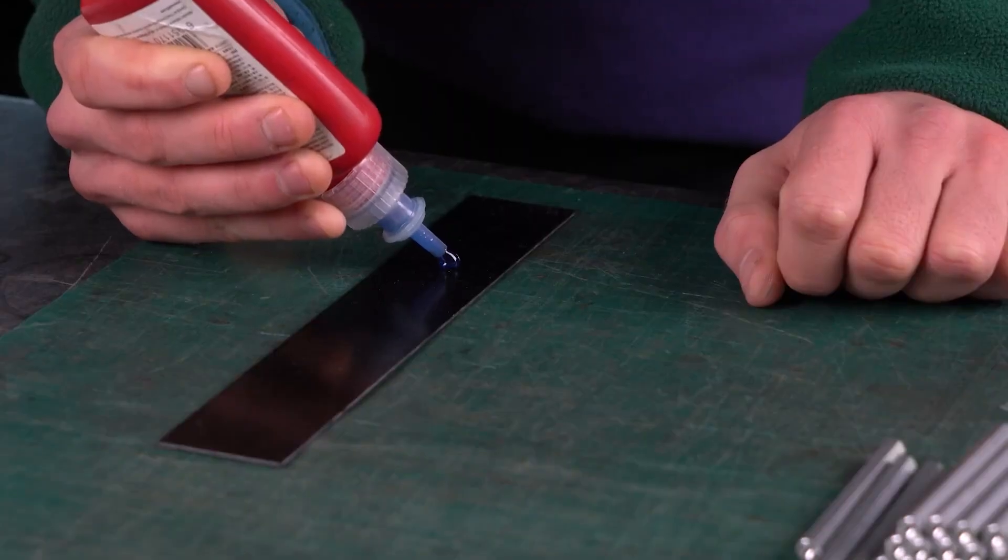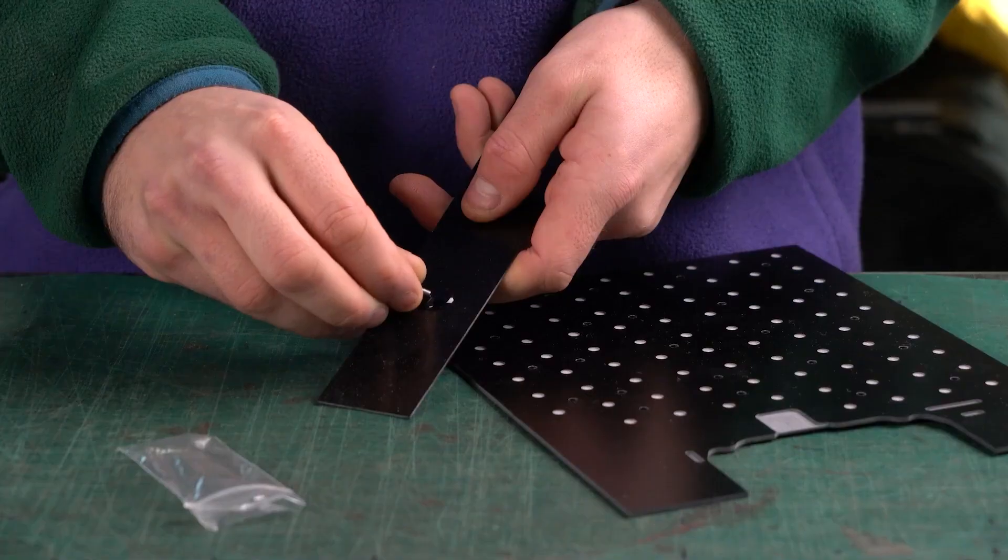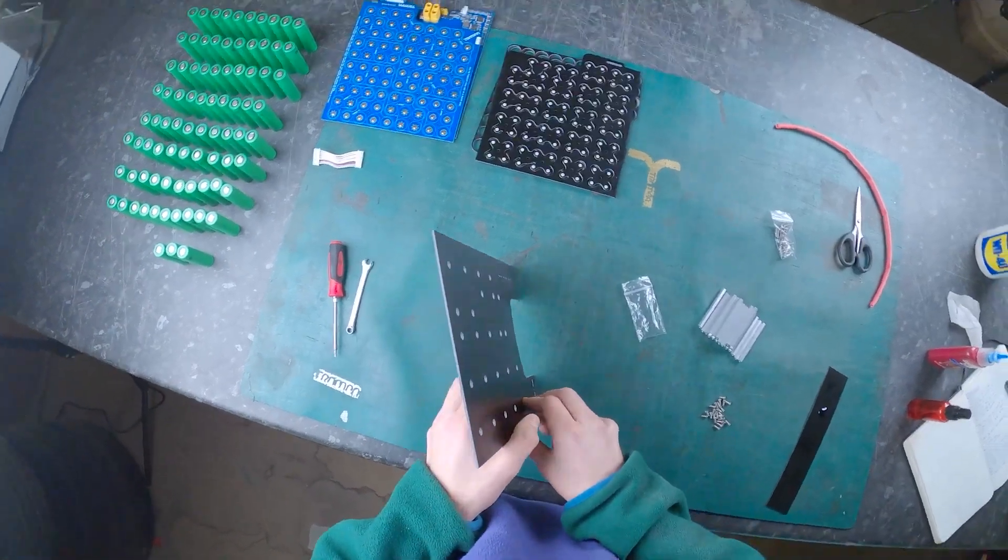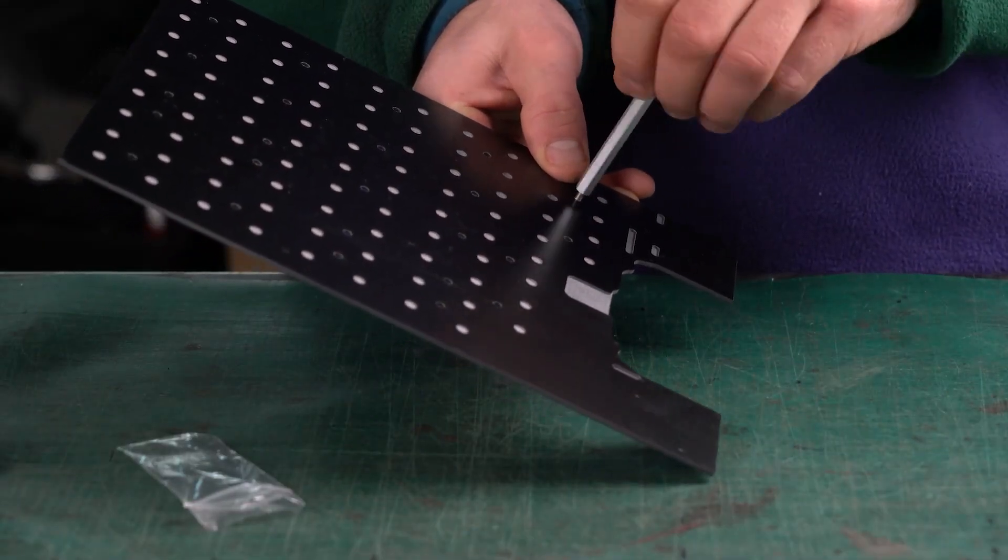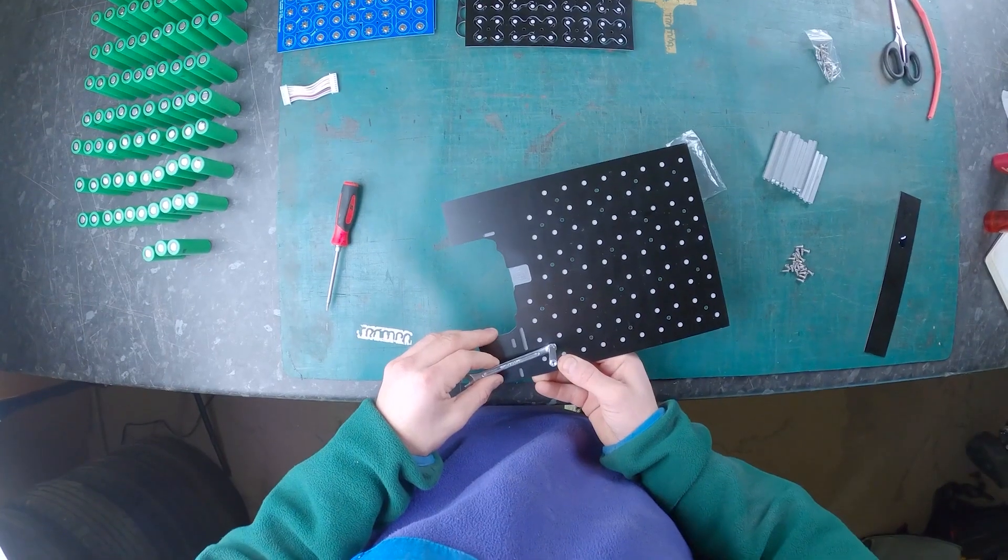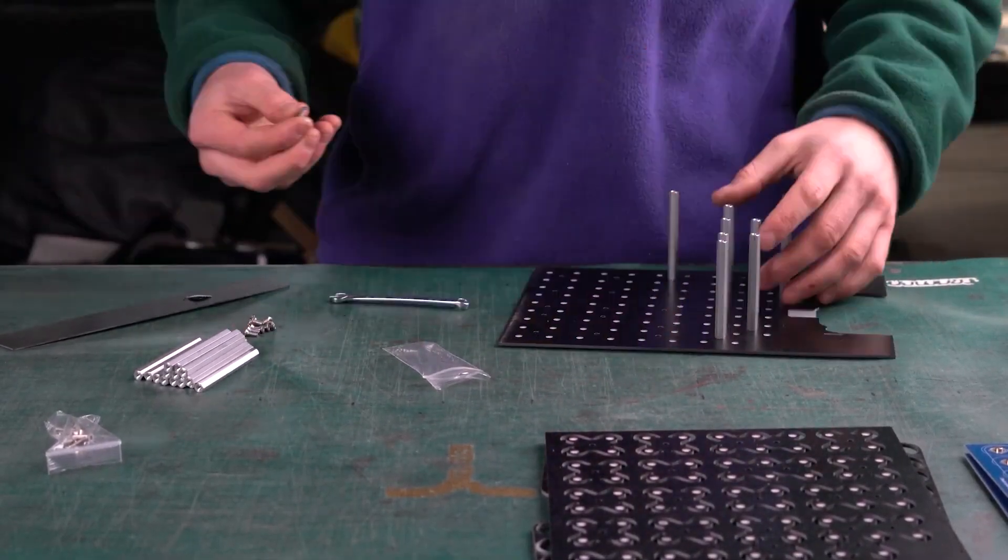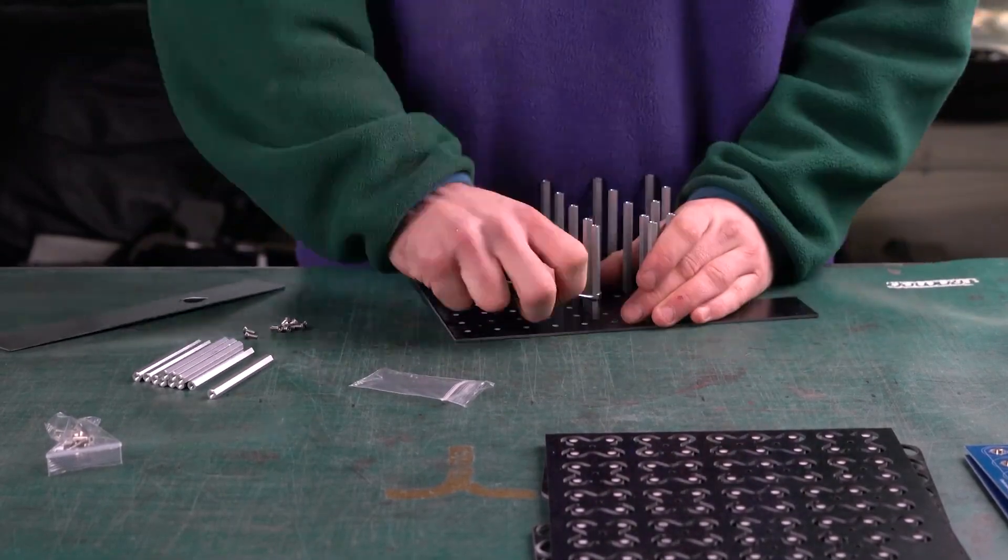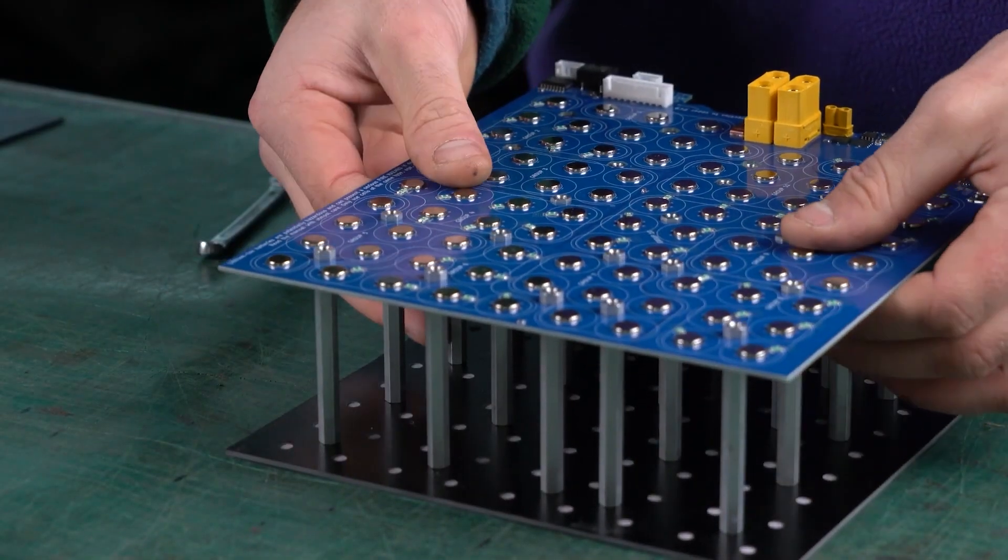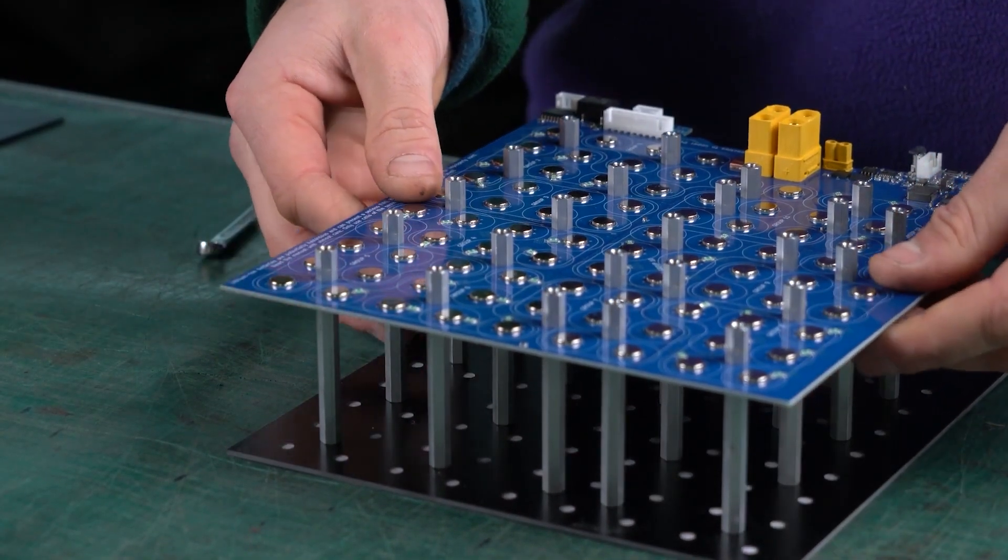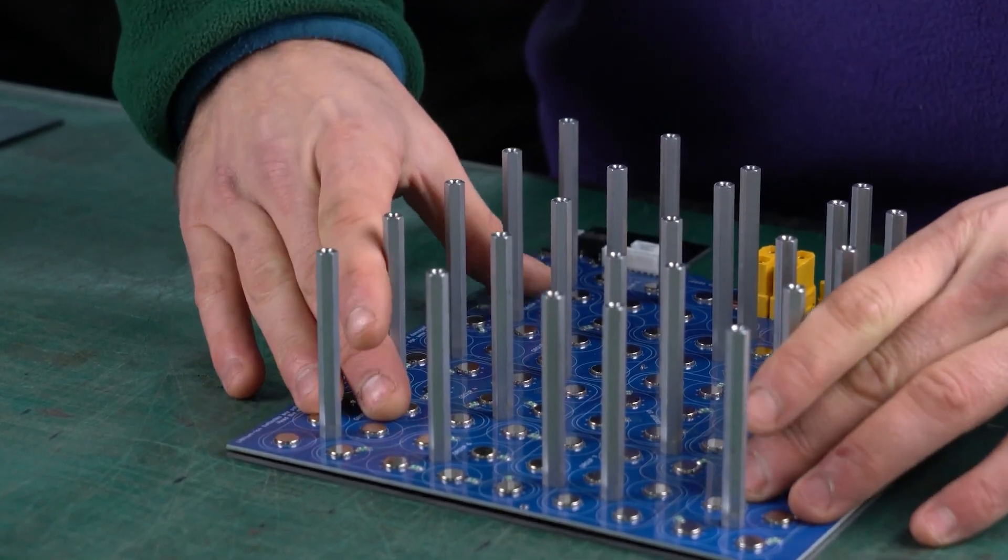The first thing to do is mount all 24 hex spacers into the base panel. Use medium strength threadlock to lock them all in place. Make sure all the hex bases are perfectly parallel to the long side of the base panel. Next, slide on the lower circuit board. If it doesn't slide on easily, realign the hex bases. The lower circuit board must rest totally flat on the base panel.